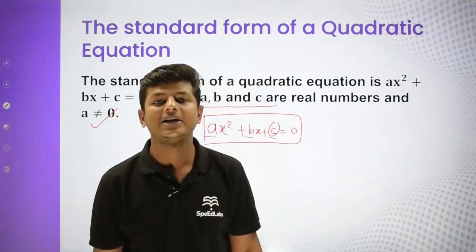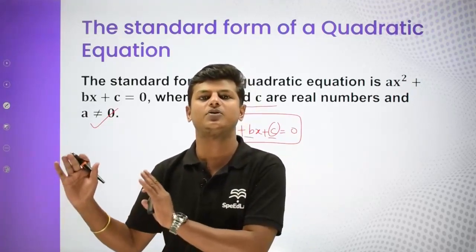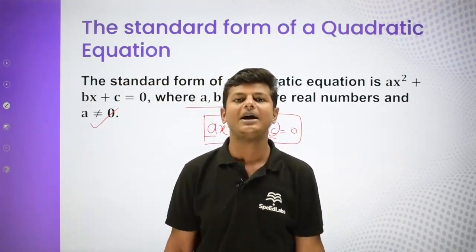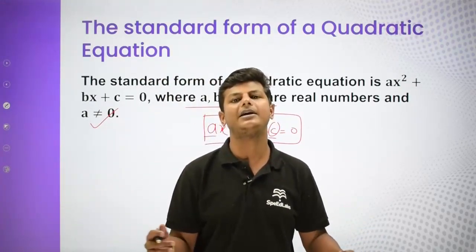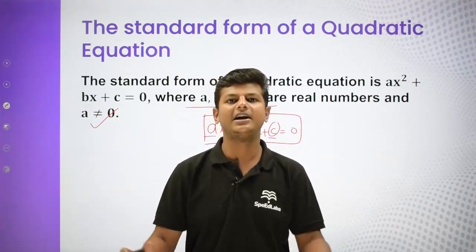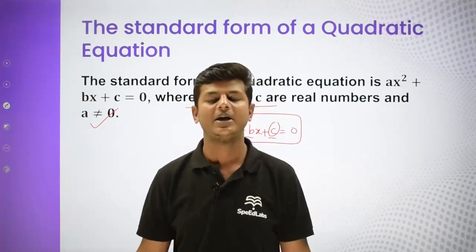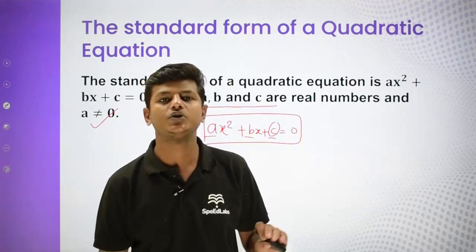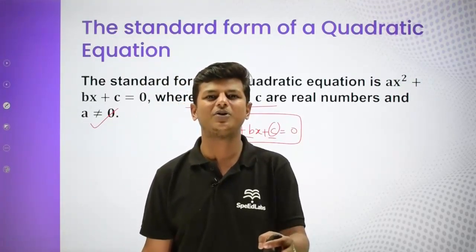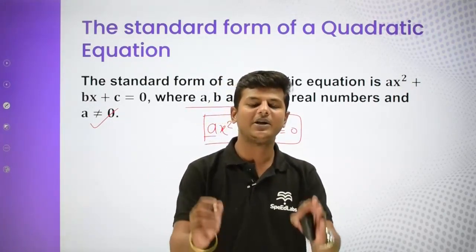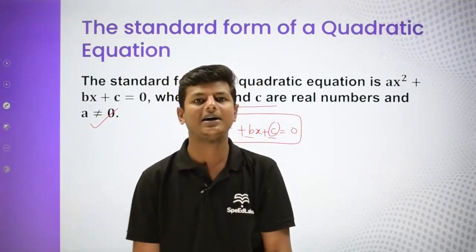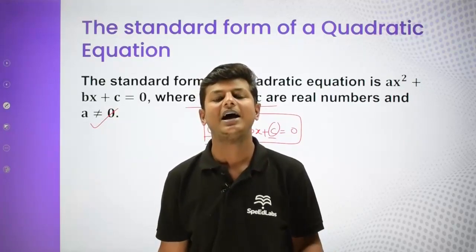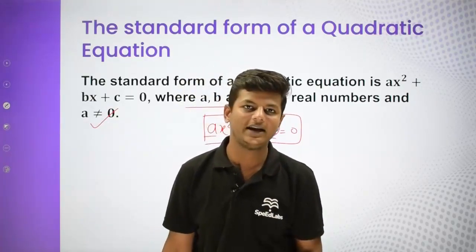The standard form of a quadratic equation is ax² + bx + c = 0, where a, b, and c are real numbers, and a is not equal to zero. If you talk about quadratic equations, there are many real-life examples. For instance, a famous NCERT example: a charity creates a prayer hall of area 300 square meters, with the length being twice of x. From length × breadth = area, a quadratic equation is formed, which we can solve directly to get the breadth.